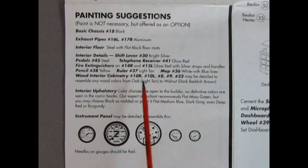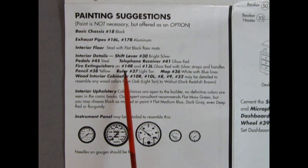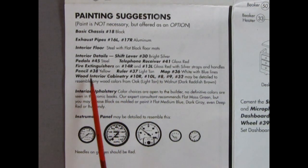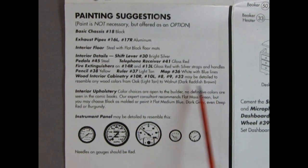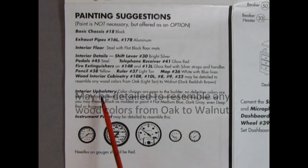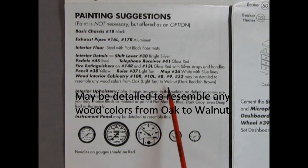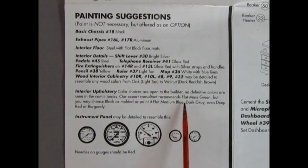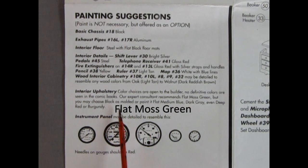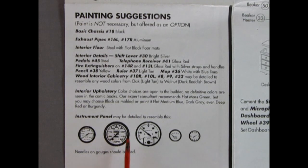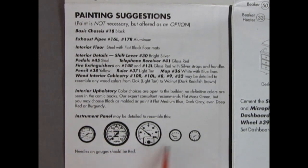Telephone receiver is gloss red, fire extinguisher is gloss red with silver straps and handles, pencil is yellow, the ruler is light tan, the map white with blue lines, wood interior cabinetry may be detailed to resemble wood colors from oak to walnut. Interior upholstery color choices are open to the builder, no definitive colors are seen in the comic books. Our expert consultant recommends flat matte green but you may choose black as molded or painted flat medium blue, dark gray, even deep red or burgundy. Then it shows the instrument panel, maybe detail to resemble this with the needles and gauges.